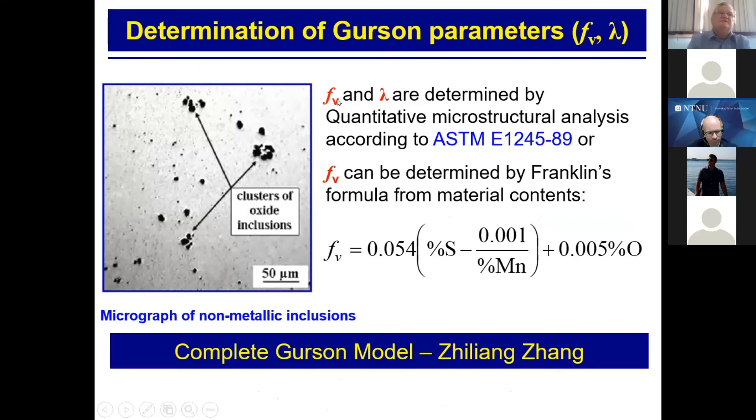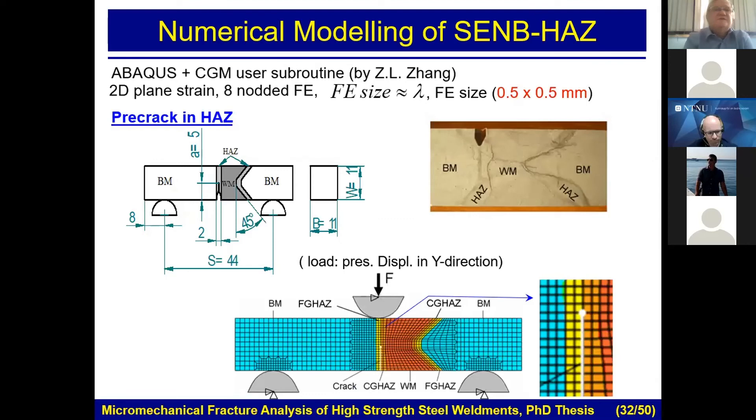As you can see here, this is the void volume fraction, and this is a mean distance between them. And this lambda parameter is very important. You will see that meshes we later used for simulating this process depends strongly on lambda. Actually, it should not, but it does. We still can't solve that problem. Anyhow, what I'm showing you, what I will show you, is so-called complete Gurson model as developed by Zhiliang Zheng. And once again, I thank him for allowing us to use numerical subroutines that he developed.